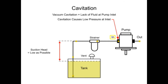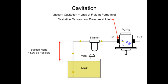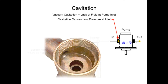When the pressure at the pump inlet drops below the vapor pressure of the liquid, vapor bubbles form and the fluid appears to boil. When the bubbles collapse, they can damage the pump by removing small pieces of metal. This is called pitting and can cause permanent damage to the pump.